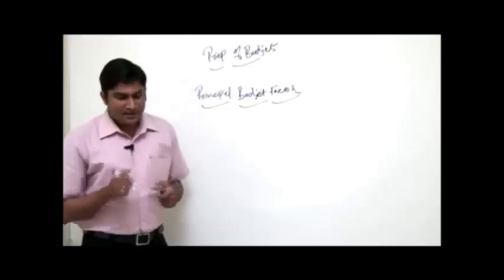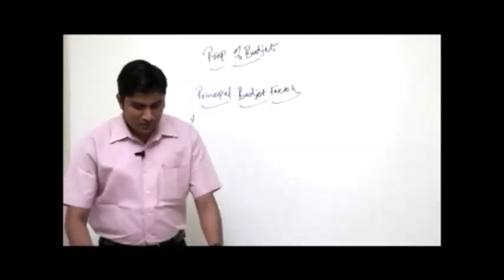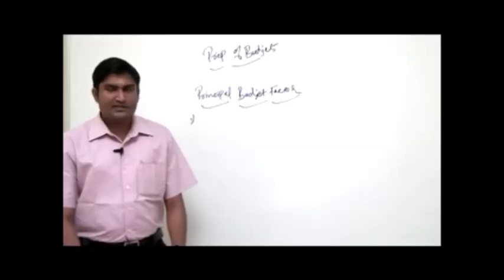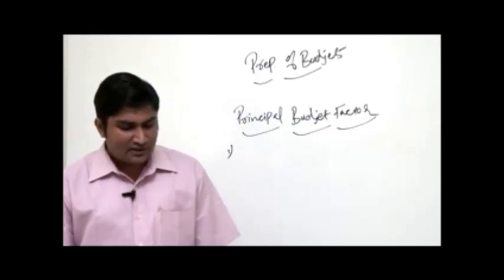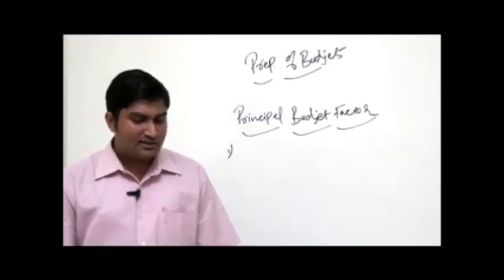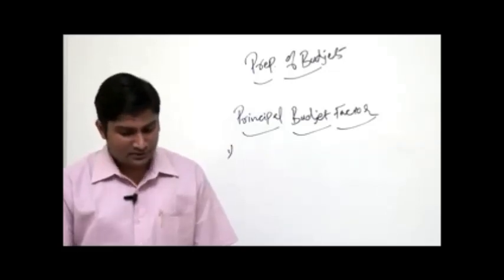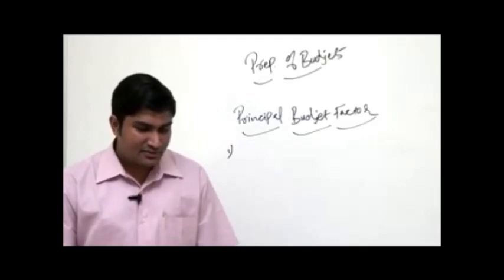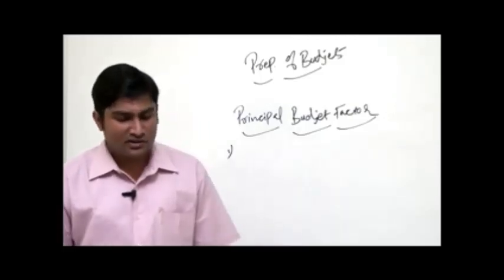Illustration 1 on calculating normal capacity: In a year, 15 workers work in a department on a single shift basis. Statutory holidays are 18 days. Normal maintenance requires 250 hours per month. Capacity utilization during the last 5 years: 2000 — 30,000 hours; 2001 — 38,000 hours; 2002 — 31,000 hours; 2003 — 30,900 hours; 2004 — 26,000 hours. We must calculate the capacity of the organization.